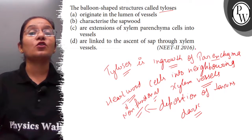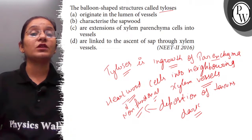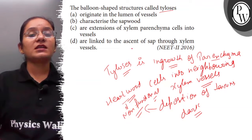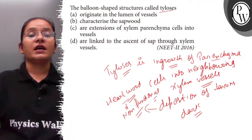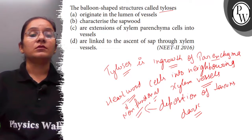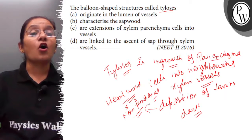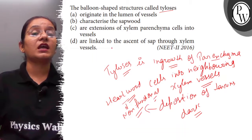These are the ingrowth of parenchyma cells into the neighboring xylem vessels. (d) Linked to ascent of sap - not at all, because due to deposition the wood becomes non-functional, so conduction will not occur, so ascent of sap will not happen.